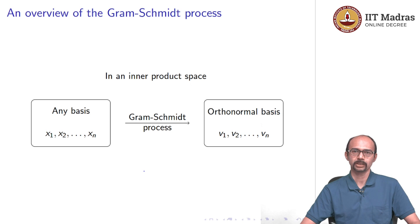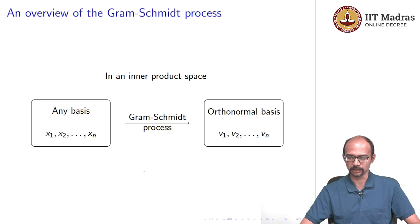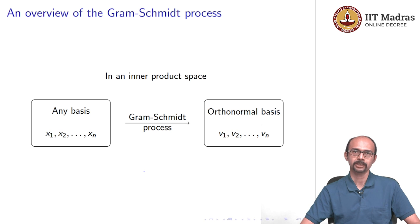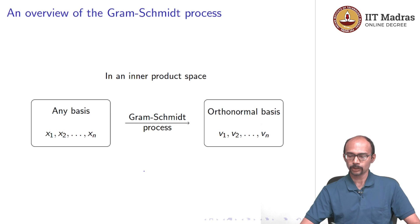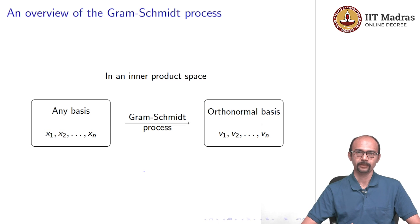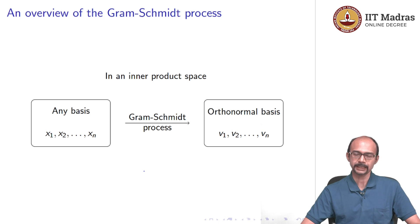Before we go ahead, let us recall what a basis is. A basis is a linearly independent set which is also spanning. In other words, every element of your vector space — or in this case, an inner product space — can be written as a unique linear combination of these vectors x1, x2, ..., xn. This is true for any vector space and we have seen how to produce a basis.